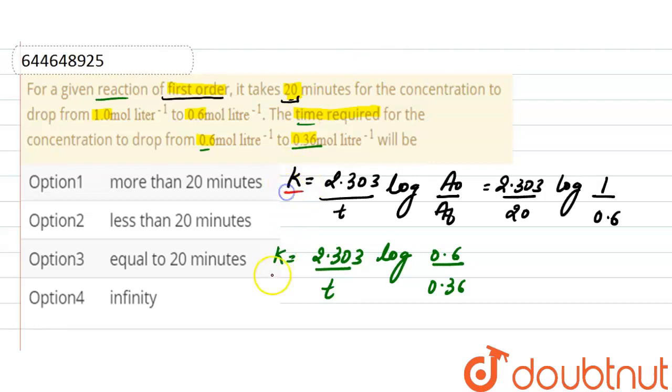As here both the two data sets belong to the same reaction, so for the same reaction, rate constants are also equal because rate constant only depends on change in temperature. So we'll equate both the equations. This will be 2.303 divided by 20 log of 1 divided by 0.6.